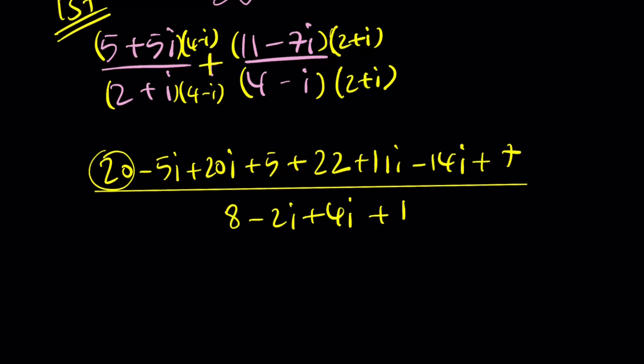Let's go ahead and simplify this. How do you add complex numbers? You basically add the real parts first. 20 plus 5 plus 22 plus 7, it's going to be 25, 47, 54. And then you take care of the imaginary parts. Basically combine like terms. 20i and 31, and it's going to be 17, and then going to be 12, positive 12i. 8 plus 1 is 9, and 4i minus 2i is just 2i.